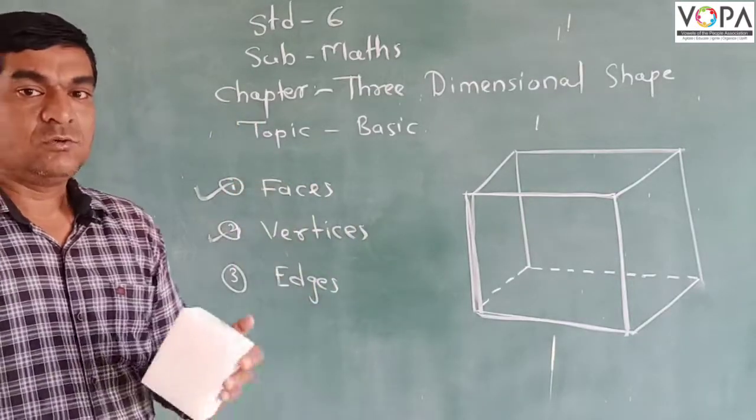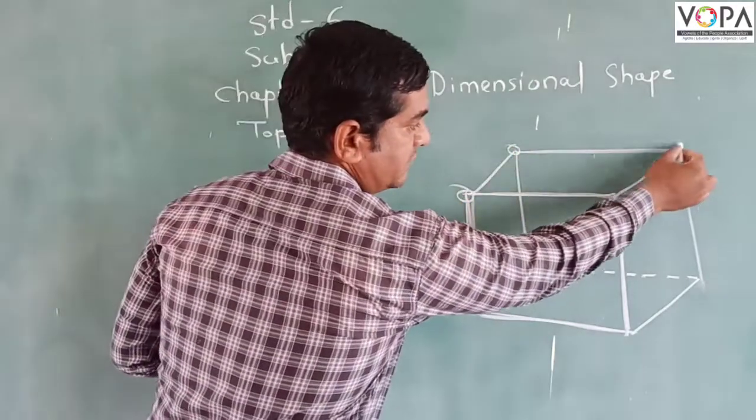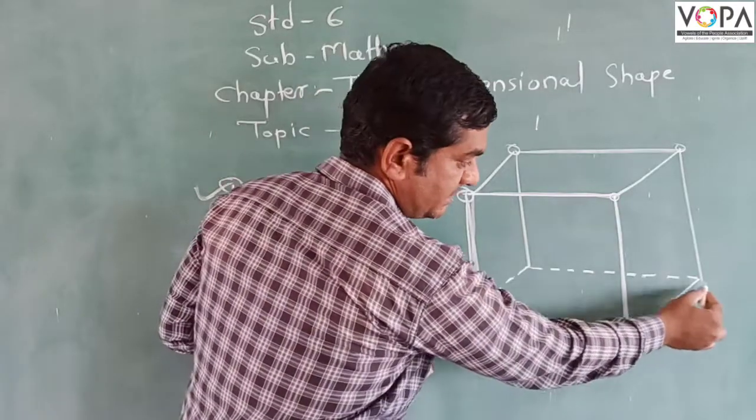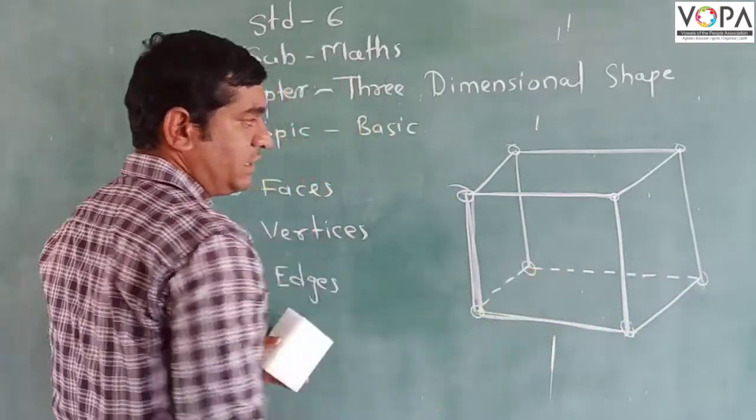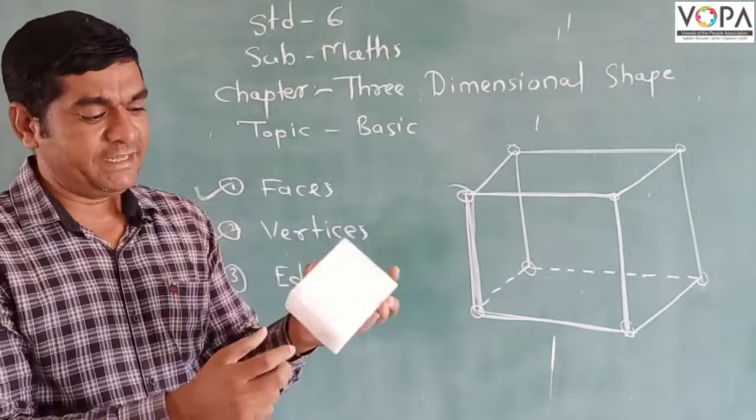So what do we mean by vertices? We can see that 1, 2, 3, 4, 5, 6, 7, and this 8 are called vertices. By the 3D diagram we find here the vertices.